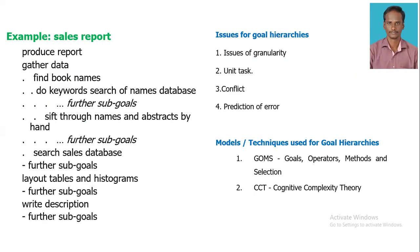For this example, producing a report requires gathering data. To gather the data, we need to find the book names using keywords. We put keywords to search the names of books in the database. Further sub-goals for searching the database include shifting through names and abstracts, then searching the sales database, which is further divided into laying out tables and histograms, and finally writing the description of the information.